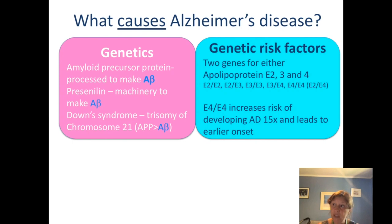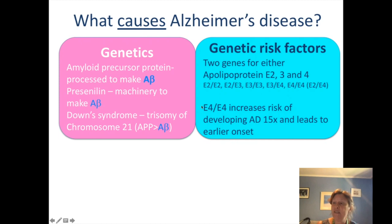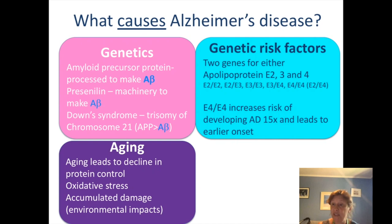There are other genetic risk factors: two copies of apolipoprotein E4 increase the risk of developing Alzheimer's disease around 15 times and can lead to a slightly earlier onset disease. However, increasing the risk does not mean that a person will definitely get this disease — that's really important. The biggest risk factor is aging, which leads to a decline in how proteins are controlled. We know that oxidative stress is very important as we age, and we could have accumulated damage from environmental sources.